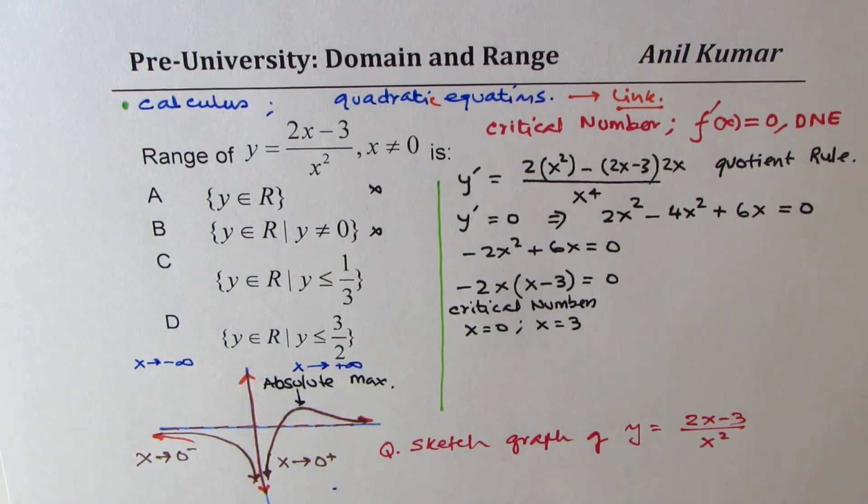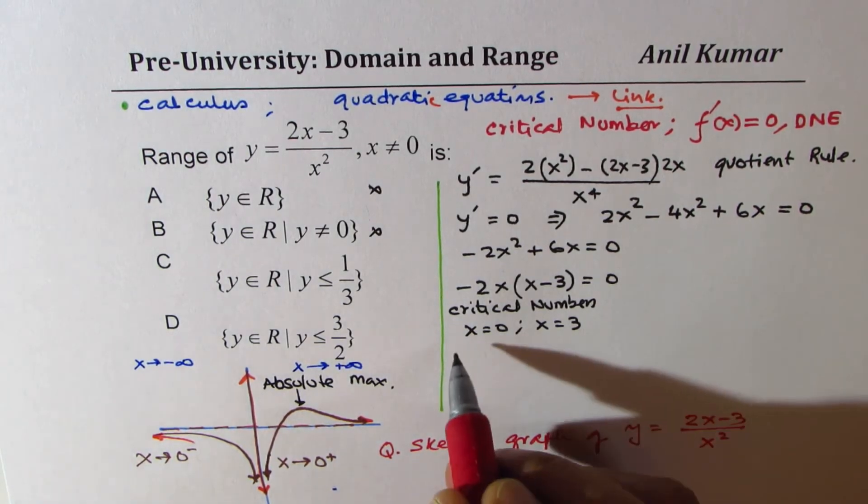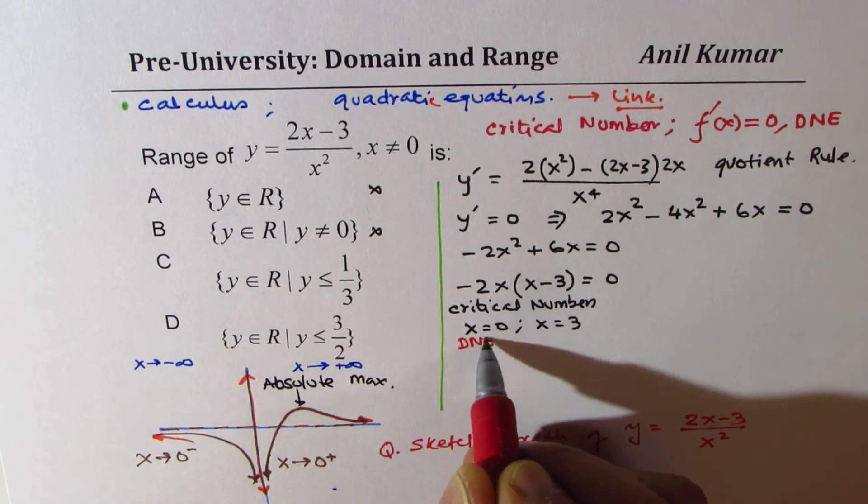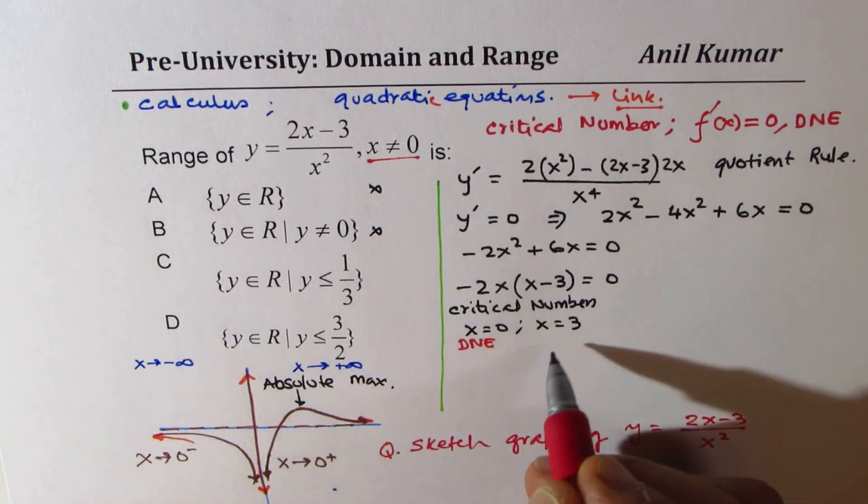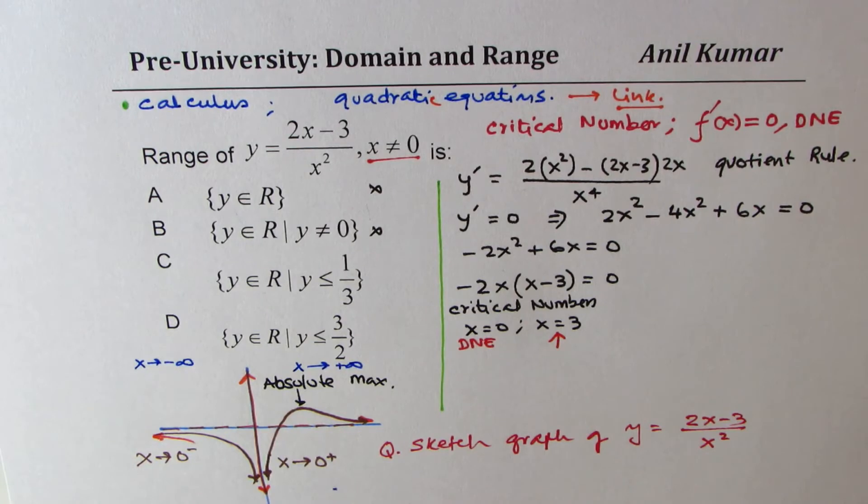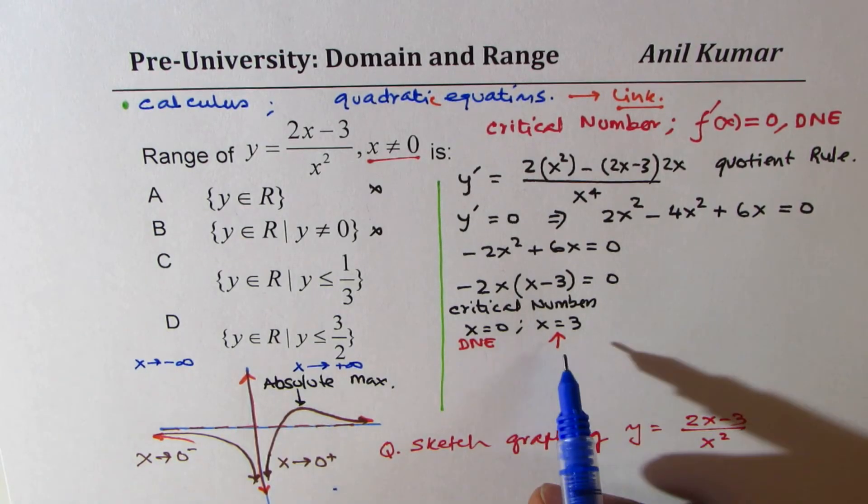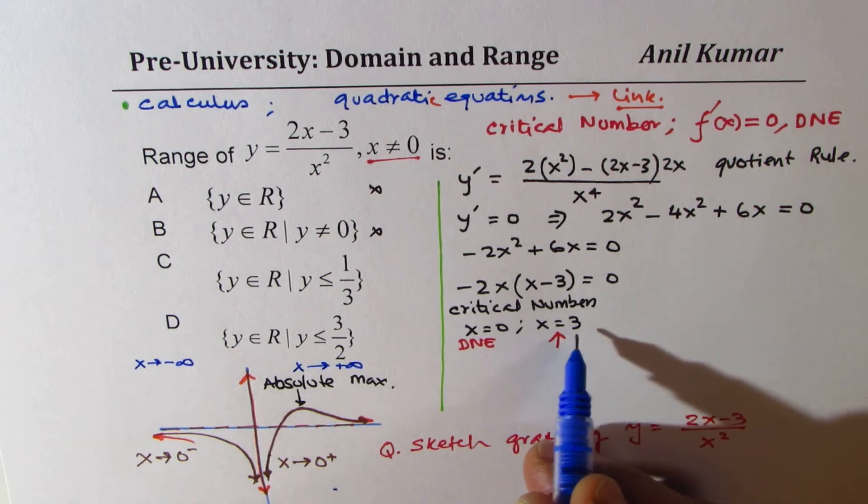Now, since x equals 0 does not exist, since it is not in our domain, we'll worry about x equals 3 now. Clearly, that gives us the maximum. So the maximum value is at x equals to 3.